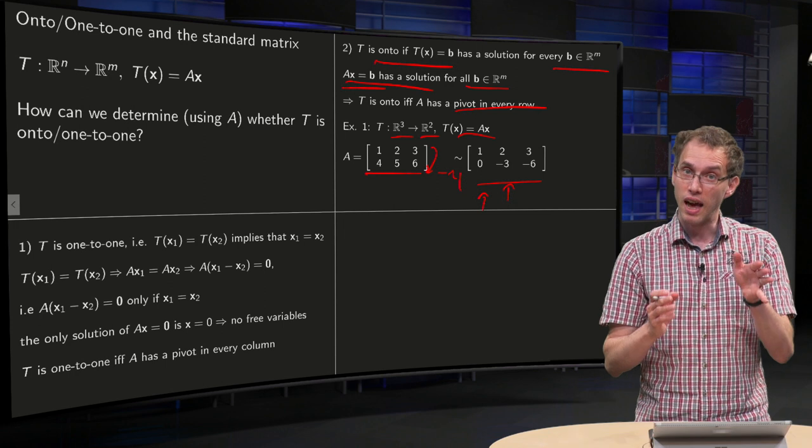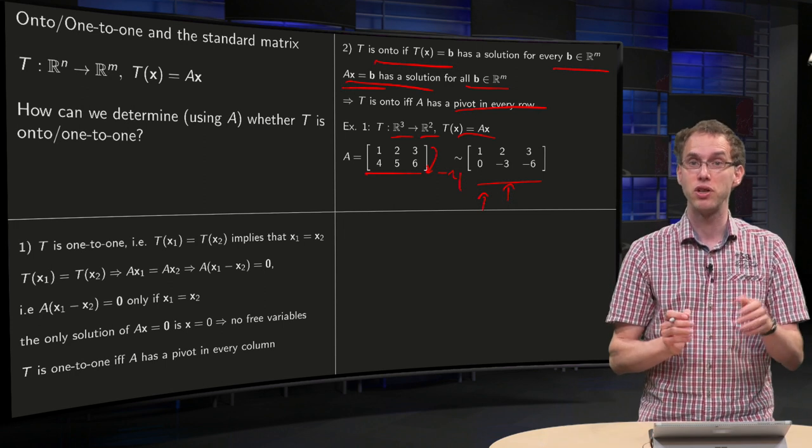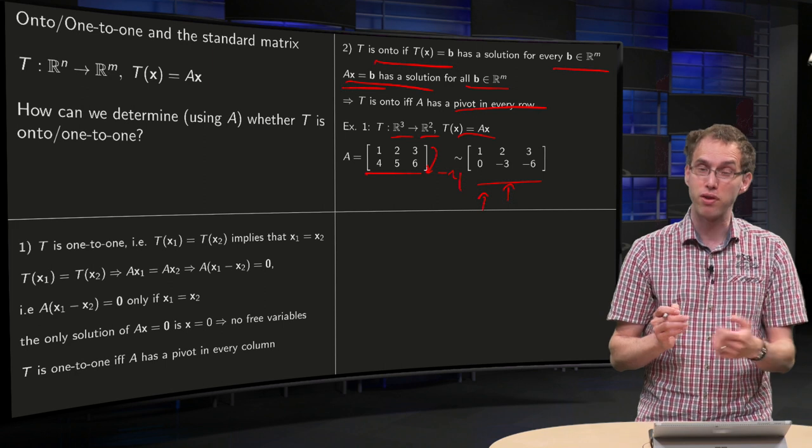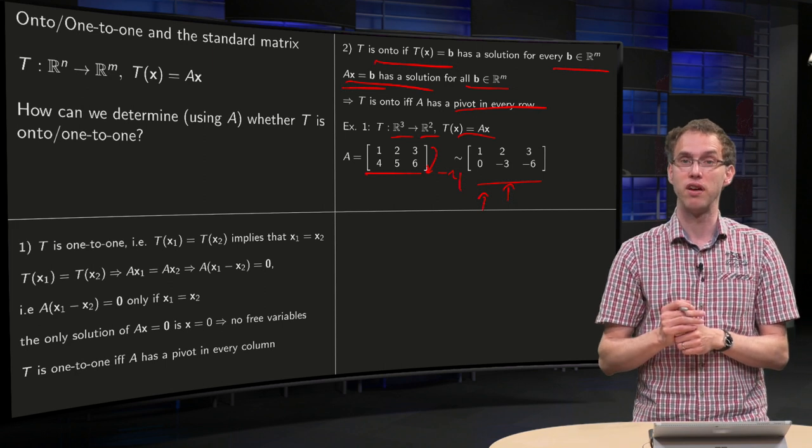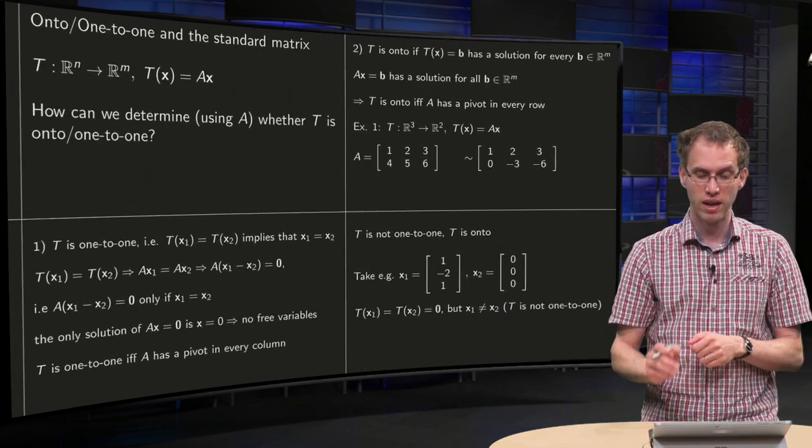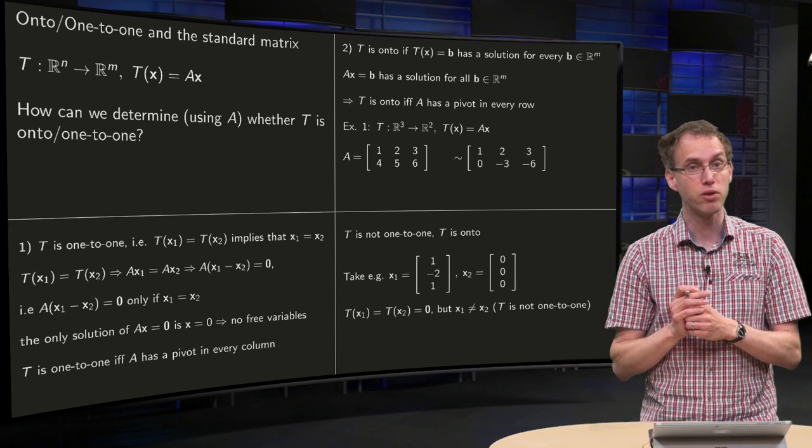So we see every row has a pivot. So our transformation T is onto. Not every column has a pivot. The third column doesn't have a pivot. So we already see that our transformation is not one-to-one.